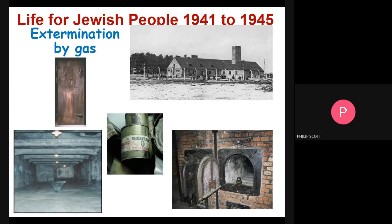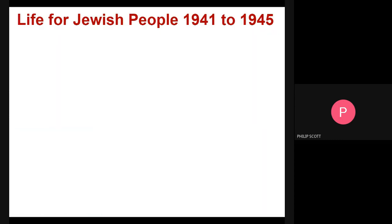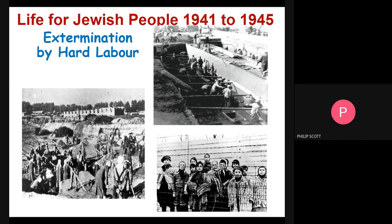Those not immediately selected for the gas chambers were sent to do hard physical labour — building and making things for the Nazis until they died from exposure and exhaustion. They were not given much shelter. In the Polish winters it was extremely cold, so they died from hypothermia and exposure; in the summer, extremely hot, so they could die of dehydration or sunstroke. They were forced to work physically very hard with the idea being that they would die eventually. That's why it's called the Final Solution — the plan to kill the Jewish population through different means.